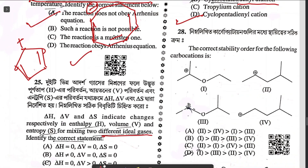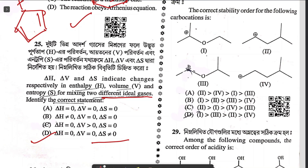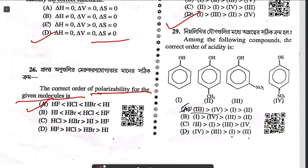Question twenty-eight asks the correct order of carbocation stability — option D, where one is greater than three, which is greater than two, which is greater than four. In structure one, the carbocation is at a secondary carbon stabilized by the lone pair of oxygen. Question twenty-nine on acidity order: greater stability of the negative charge gives greater acidity. The most acidic is compound 4, then 3, 1, 2 — option D.